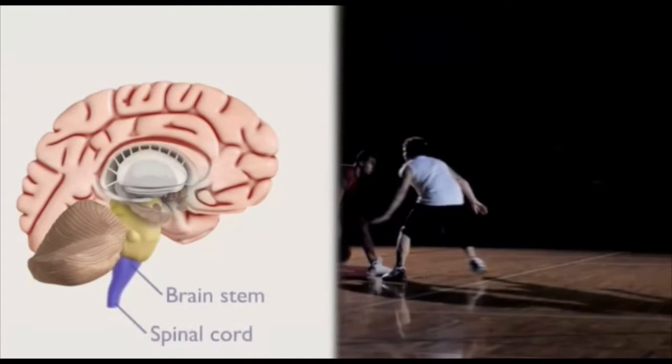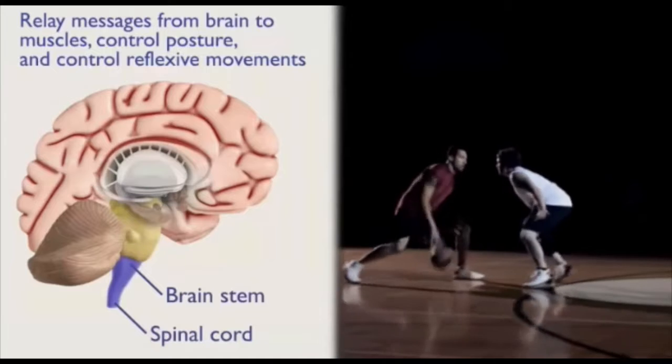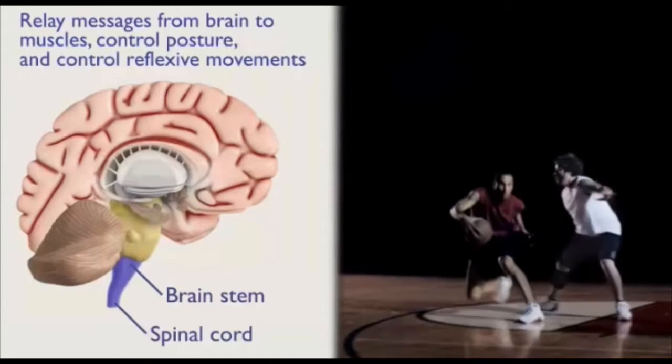The brainstem and spinal cord are lowest in the hierarchy. The brainstem and spinal cord relay messages from the brain to the muscles, control posture, and control reflexive movements.